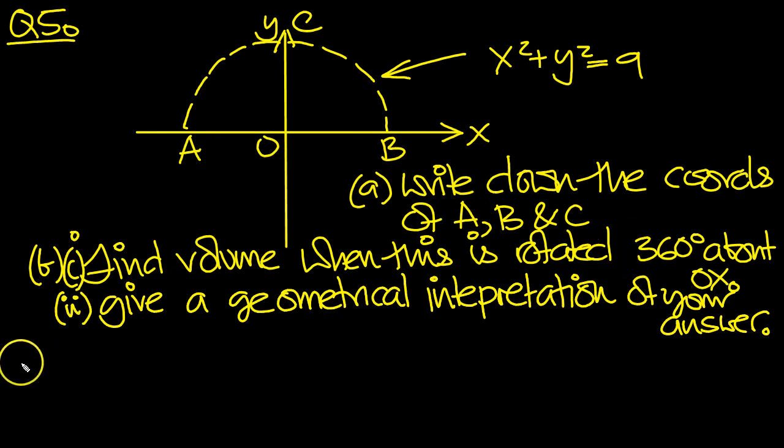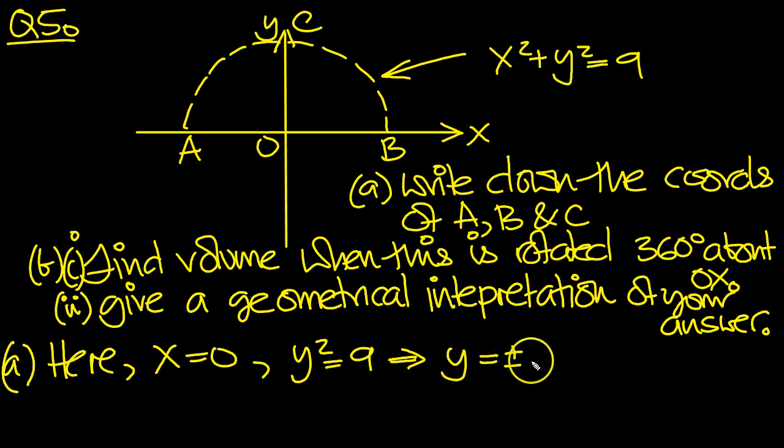So part A: Here, x equals 0. When we put 0 in here, we get y² = 9, which implies if we square root, y equals plus or minus the square root of 9 is 3.